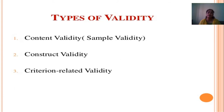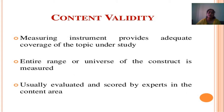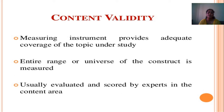Types of Validity: Content Validity, Construct Validity, and Criterion Related Validity. Content Validity is commonly done after the final preparation of the tool. The tool is given to experts in that field, and these experts check whether the tool is valid or not. The measuring instrument must provide adequate coverage of the topic under study, and the entire range of the construct is measured and scored by experts in the content area.